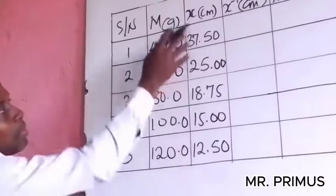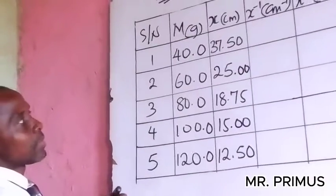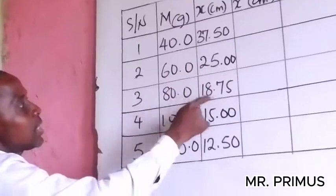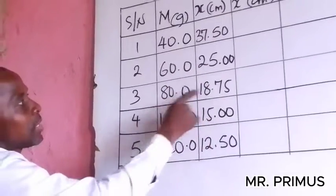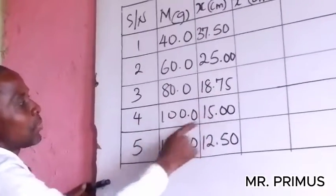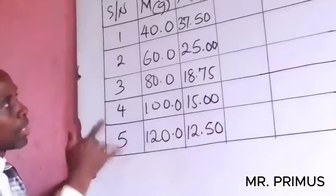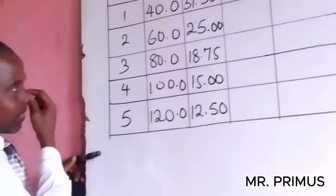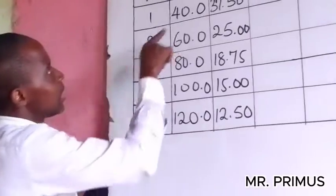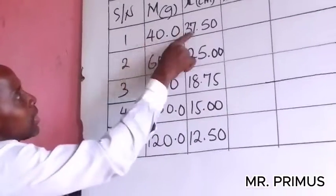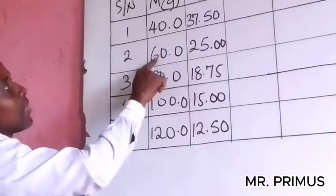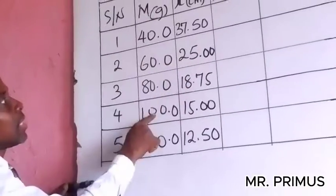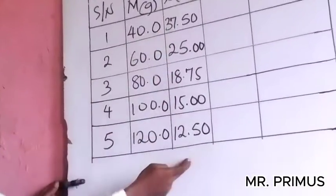Observe something here. This is 40, 37; 60, 25; 80, 18; 100, 15; 120, 12. What can you observe? When this is 40, this is 37. When this is 60, this is 25. So it is increasing here while it is decreasing here. This is increasing, this one is decreasing — something like this will give you an inverse graph.